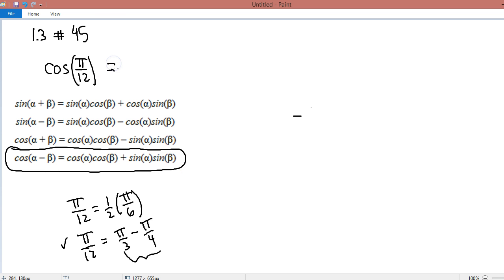And so we're going to get the cosine of π over 3 times the cosine of π over 4. And to that we add the sine of π over 3 multiplied by the sine of π over 4.